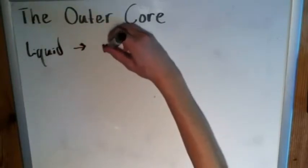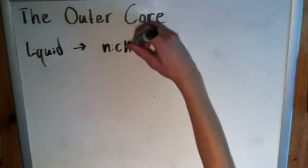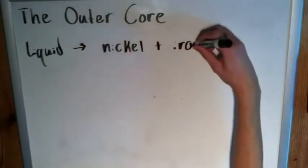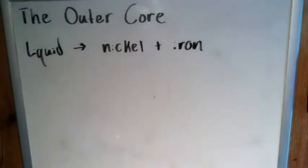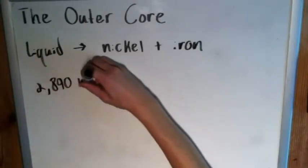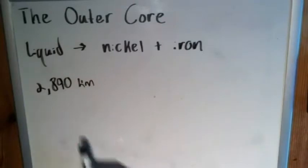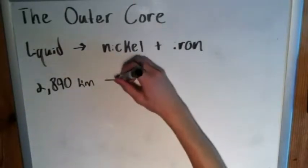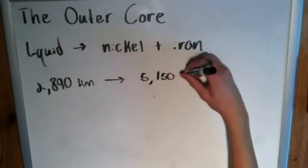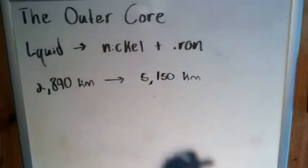It is composed of mostly nickel and iron. As far as depth goes, it extends from about 2,890 kilometers—that's where the mantle ends, right at that boundary with the mantle—and it goes to about 5,150 kilometers, or about 3,000 to 5,000 kilometers if you just want a more general idea.